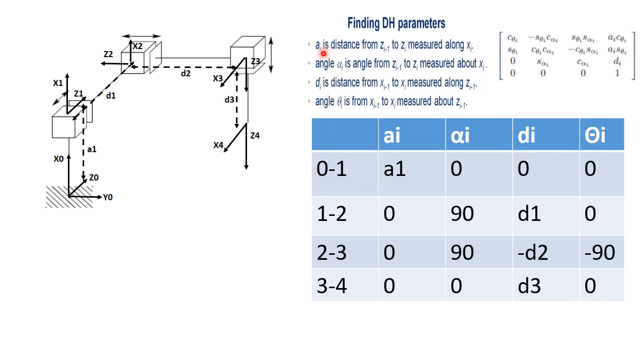So if you can see, a1 is supposed to be z0 to z1 along x1. So a1 is basically z0 to z1 along x1. And because x1 in this direction is positive, that's why a1 is positive. Alpha i, alpha 1, is basically z0 to z1 about the axis x1. There is no change from z0 to z1 about the axis x1. Hence, it is 0.